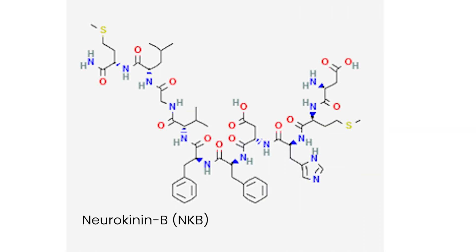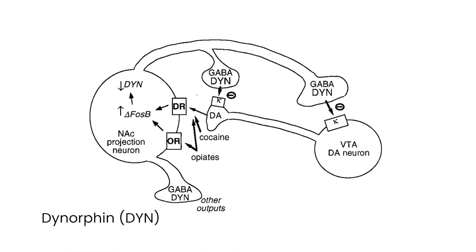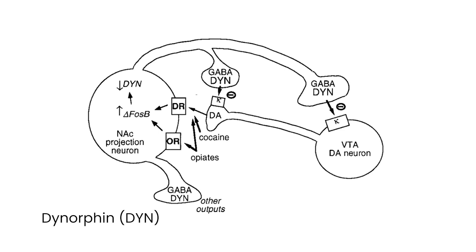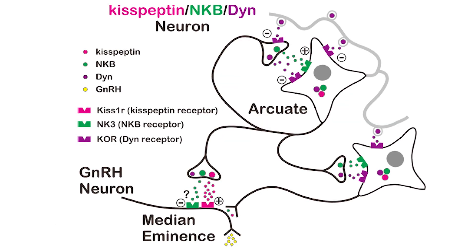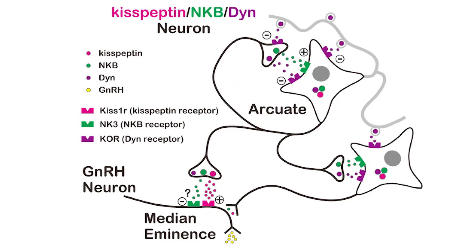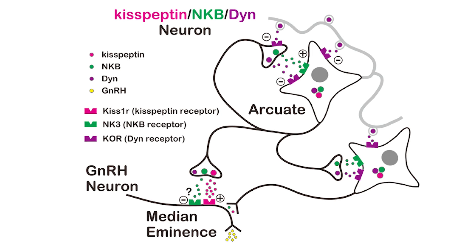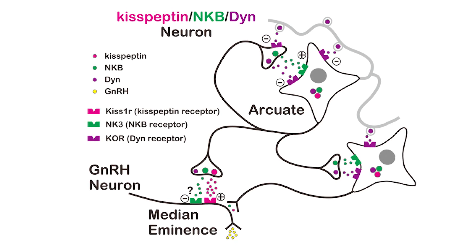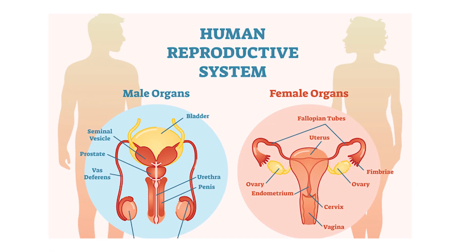Neurokinin B and dynorphin are essential coregulators of gonadotropin-releasing hormone secretion, which play crucial roles in reproductive function.